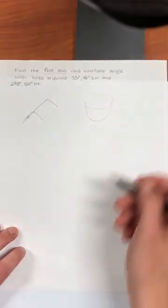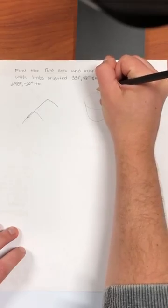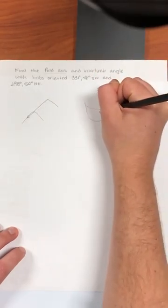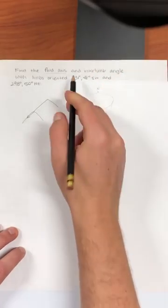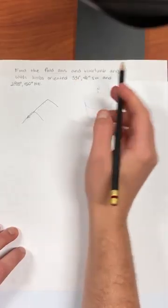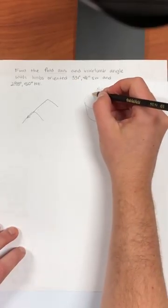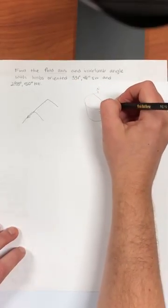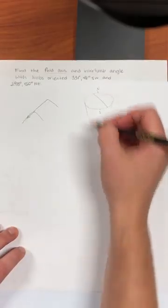So if I were going to sketch these and how they might show up in 3D on a stereonet, I'll draw a stereonet. There's north, here's south. The first fold limb we're told is oriented at 331 and dipping to the southwest.